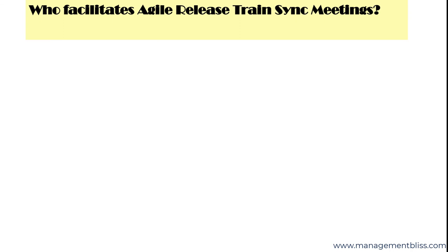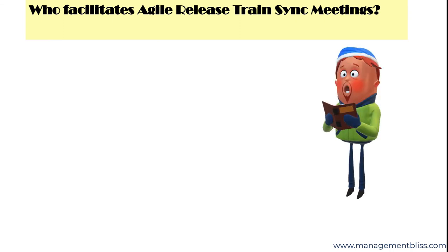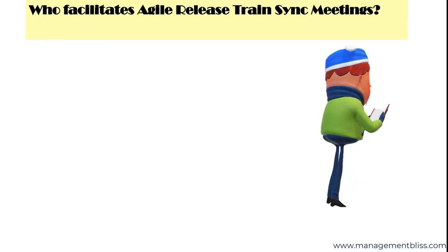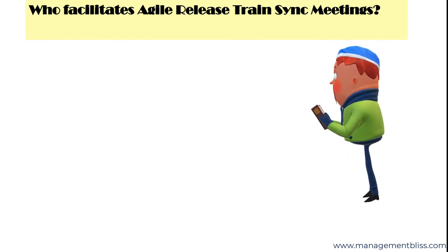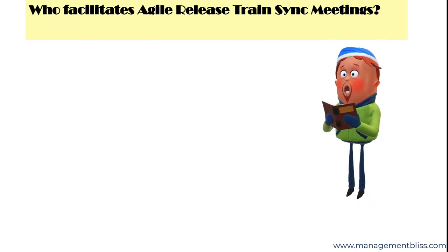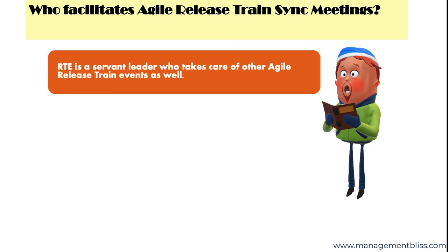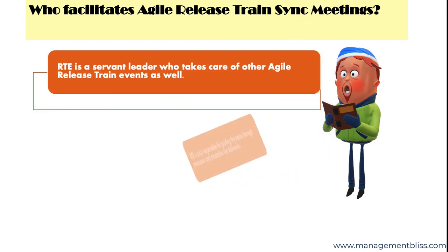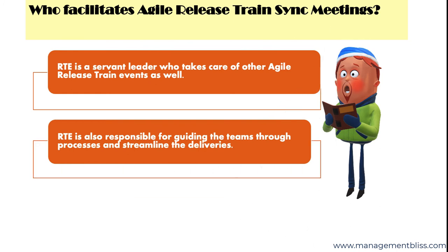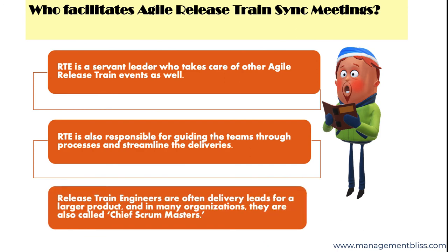Who facilitates Agile Release Train Sync meetings? The Release Train Engineer, also called RTE, is responsible for facilitating Agile Release Train synchronization meetings. RTE is the servant leader who takes care of other Agile Release Train events as well. RTE is also responsible for guiding the teams through processes and streamlining the deliveries. Release Train Engineers are often delivery leads for larger products and in many organizations, they are also called Chief Scrum Masters.